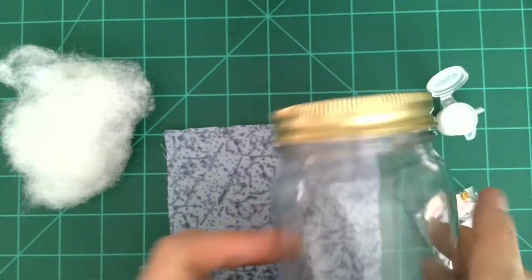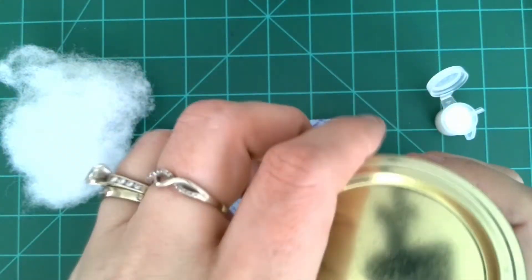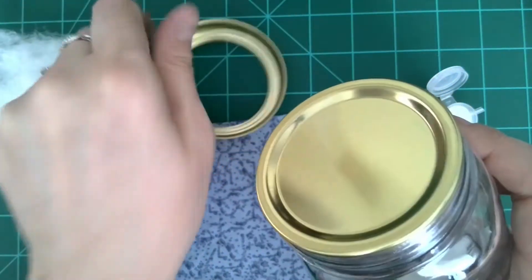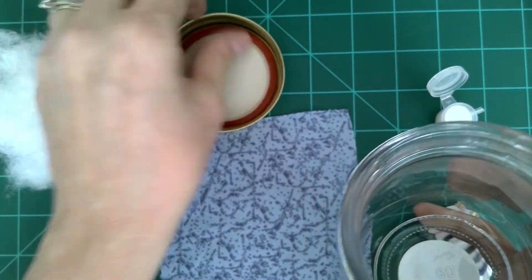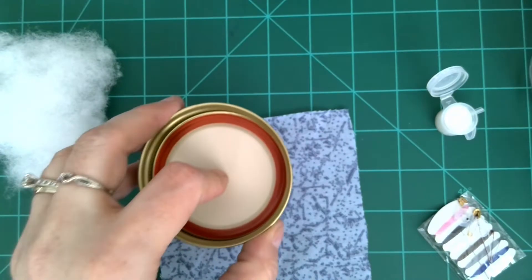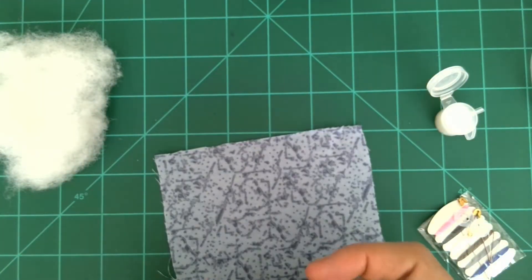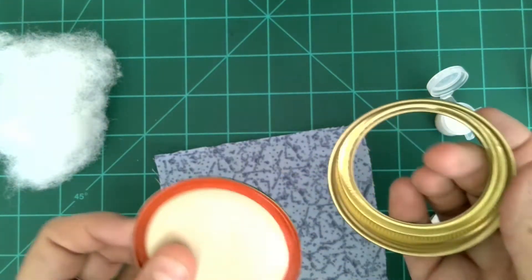Our first step is going to be to take our lid off of our jar. So I'm going to unscrew that and then you have this lid that you pop off. I'm going to set my jar aside for the moment and separate these two items.